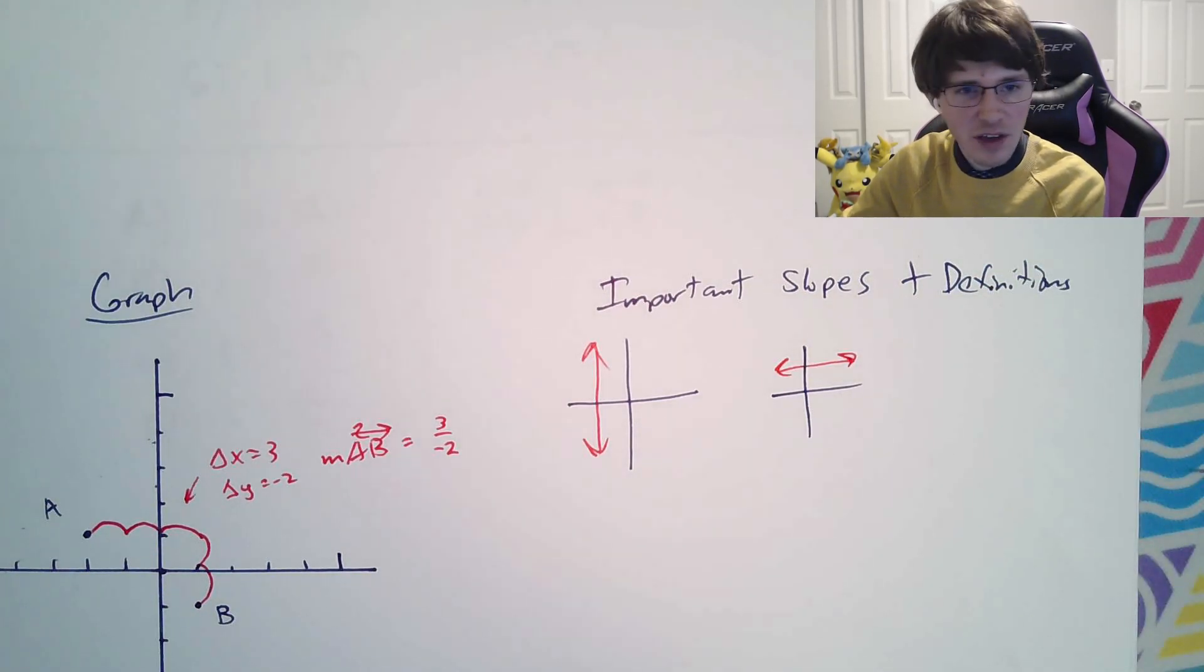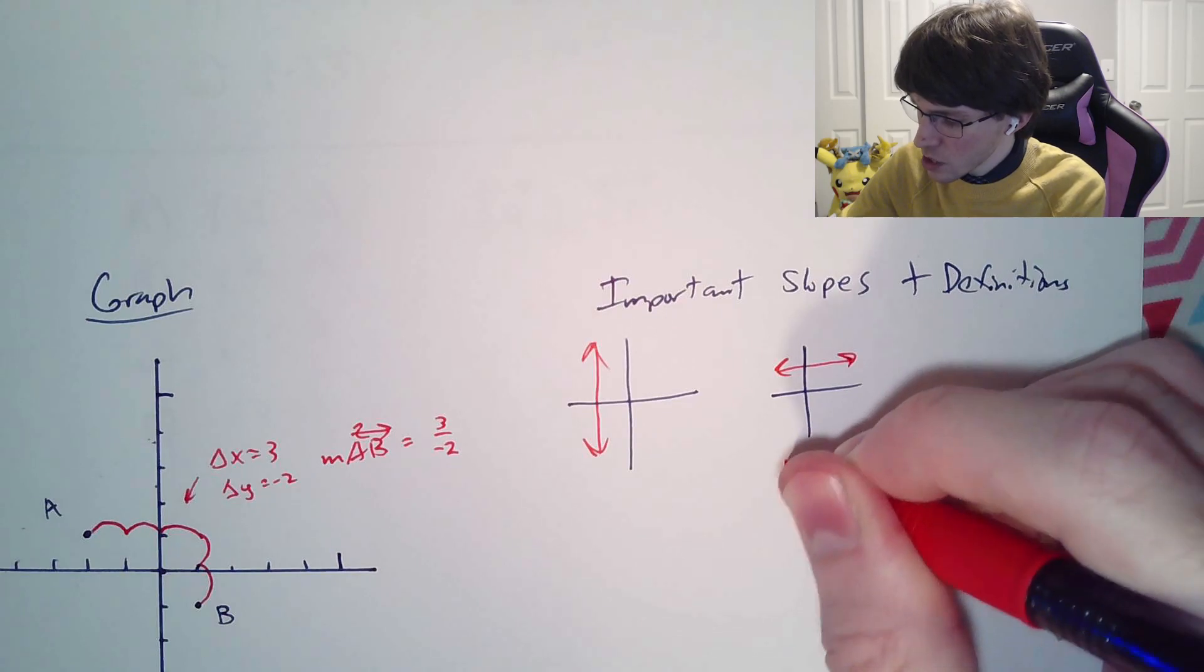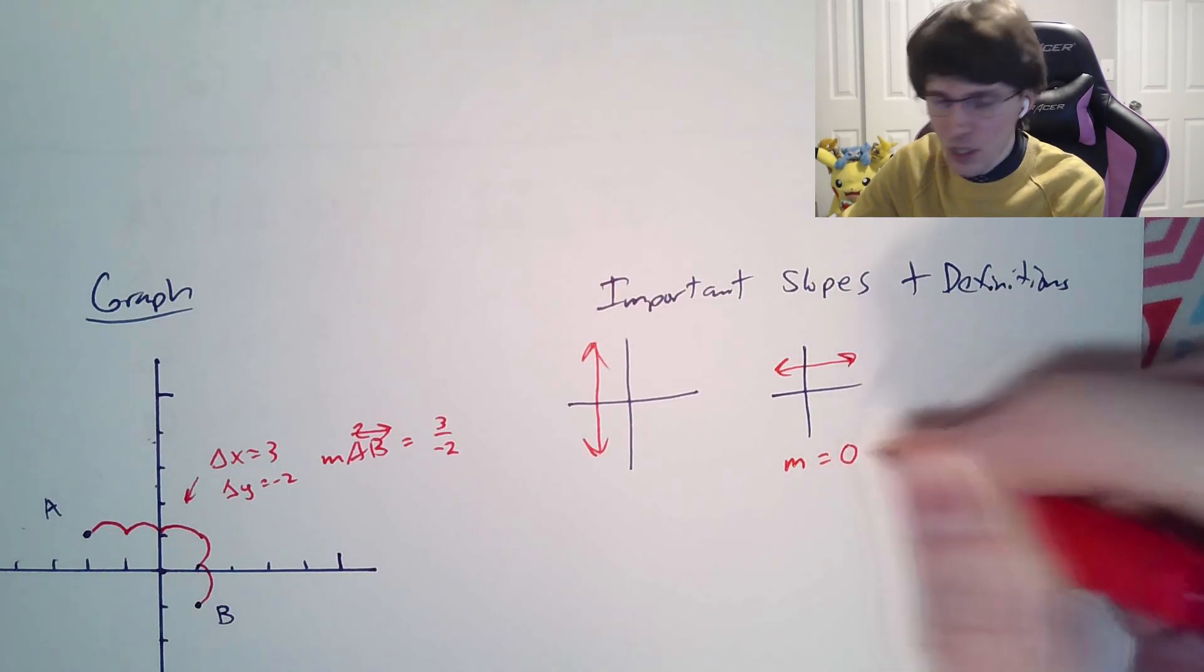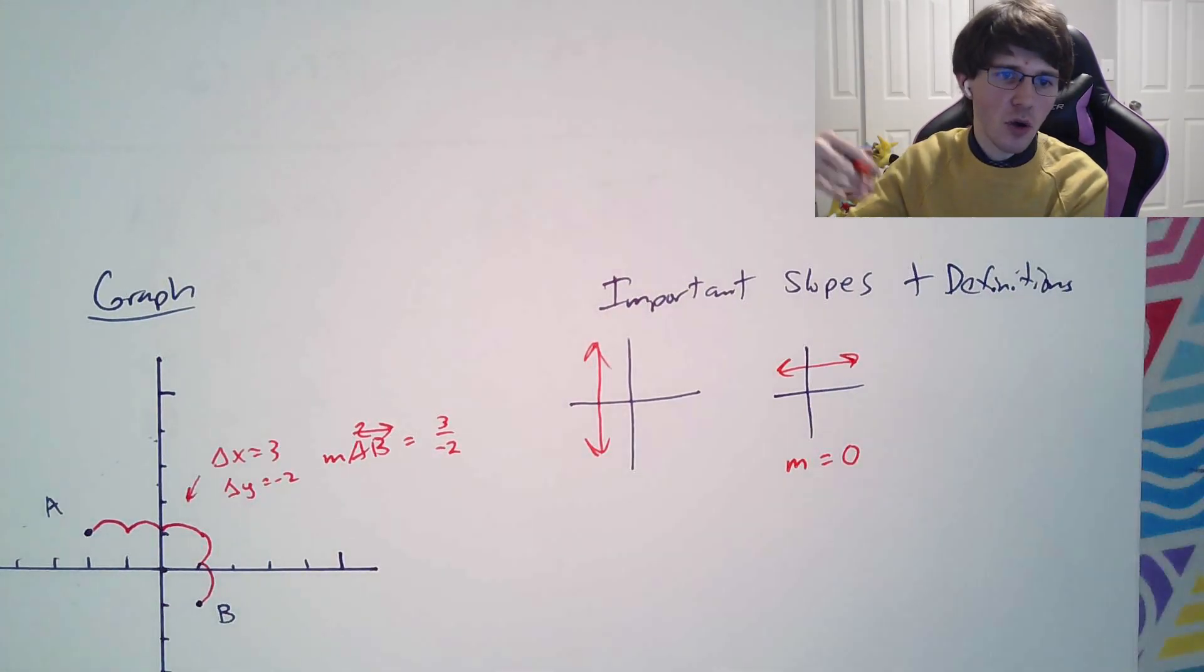As well as the horizontal slopes, the lines that go straight left and right. The straight left and right ones have a very easy value. They always have a slope of 0, no matter what, and that's because they don't go up or down at all.